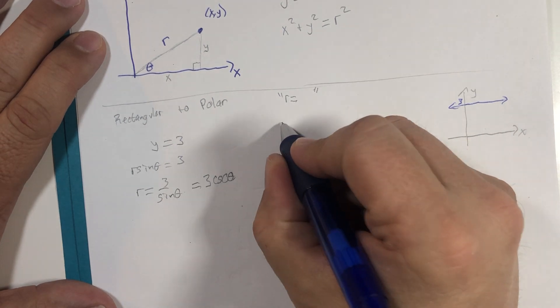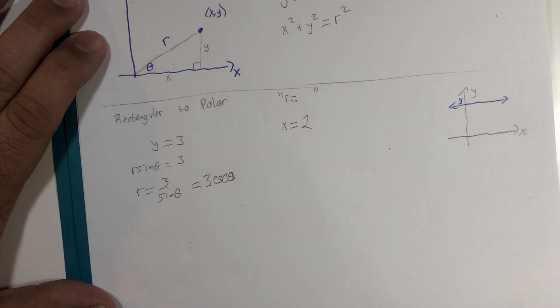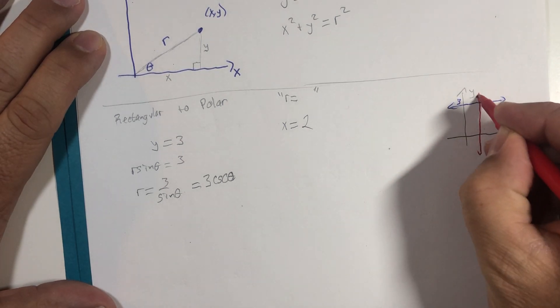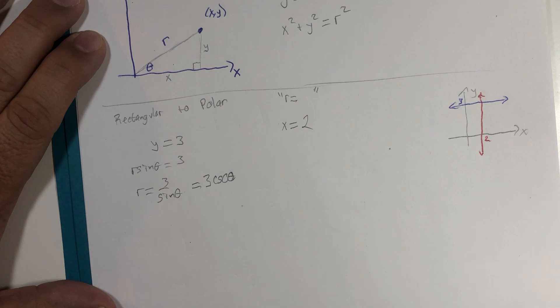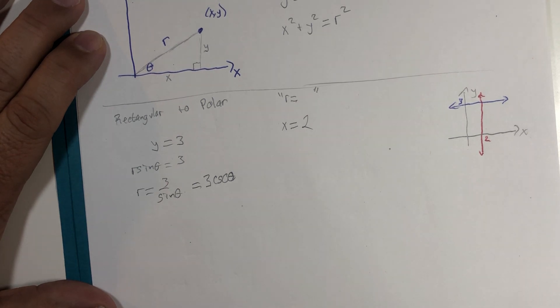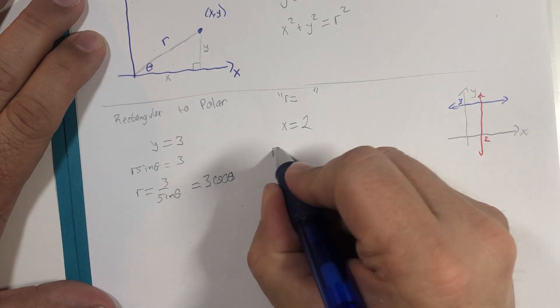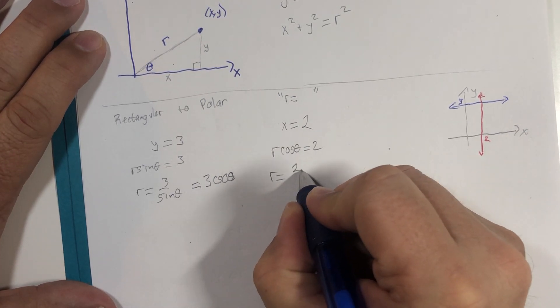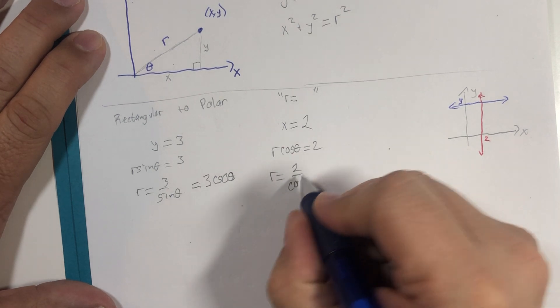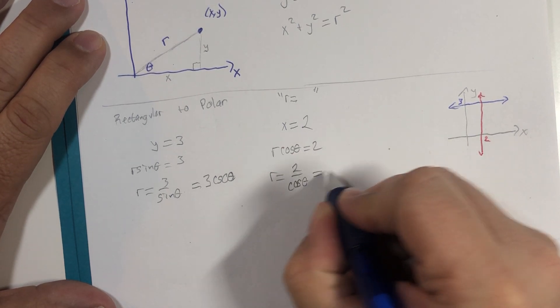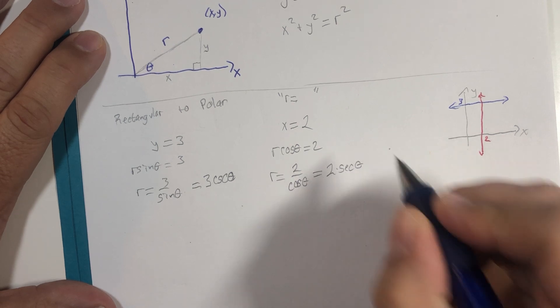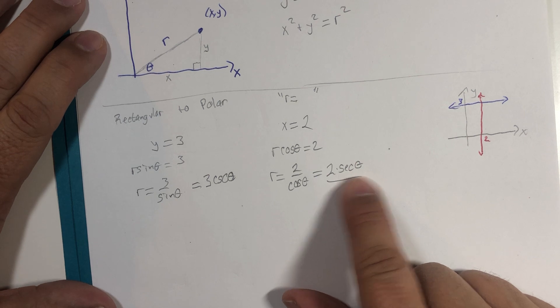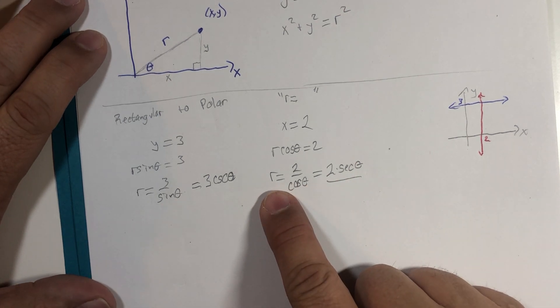What about a vertical line? 2 units to the right. This is not a function in the xy world, but r cosine of theta is 2, r equals 2 divided by cosine of theta, which is 2 multiplied by secant of theta. This is a function in the world of polar, because for every theta you get only one value of r that comes out.